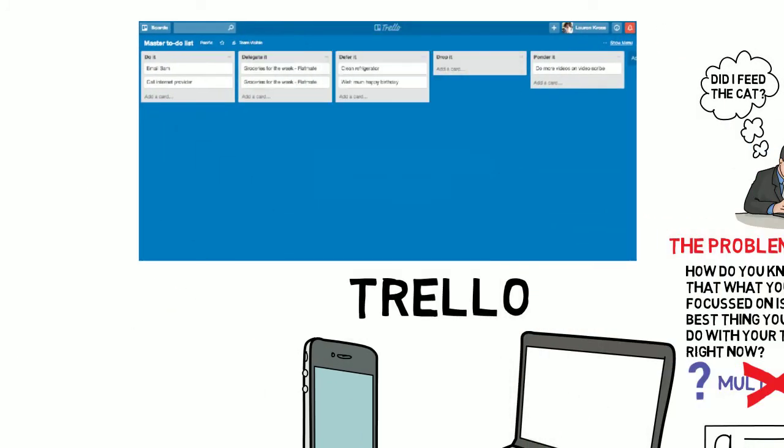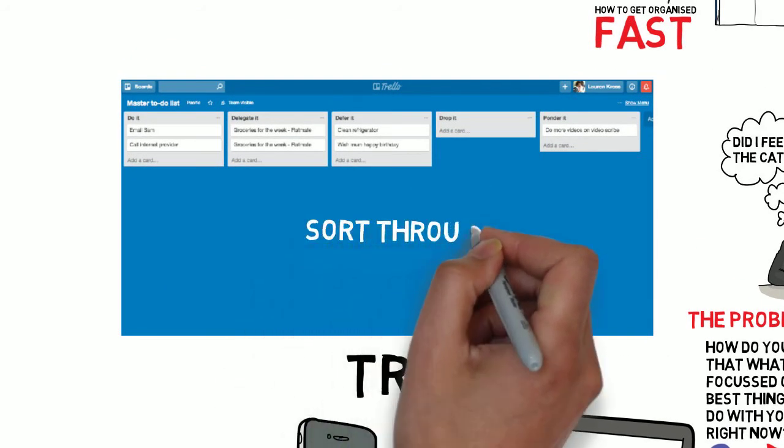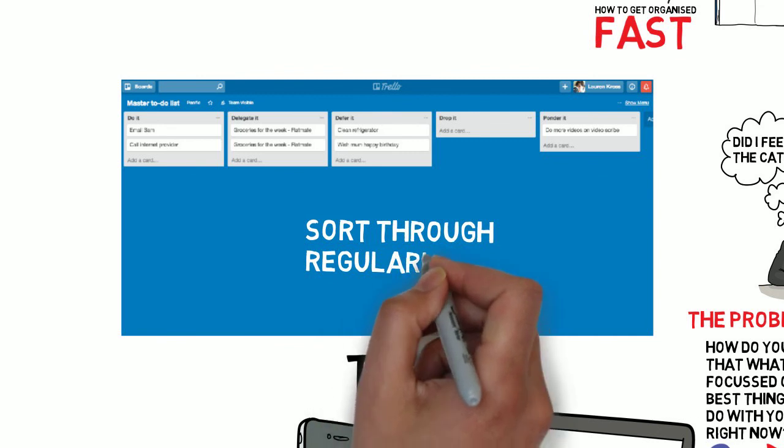This is what it looks like with each of the cards having one thing that needs to be done, just like the index cards. Sorting through this regularly is important, and it's easy on Trello as you can drag and drop things as you need to sort and re-sort them.